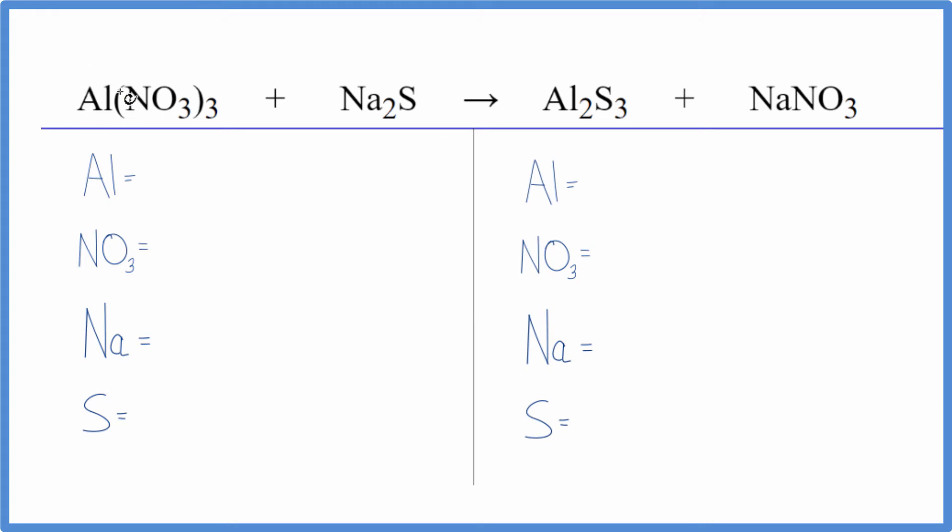Let's count the atoms up. We have aluminum, one of those, and we're going to use a trick here to make this a lot easier. You can use this on any equation that has a polyatomic ion on both sides. If it's the same on both sides, we can just count it as one thing.